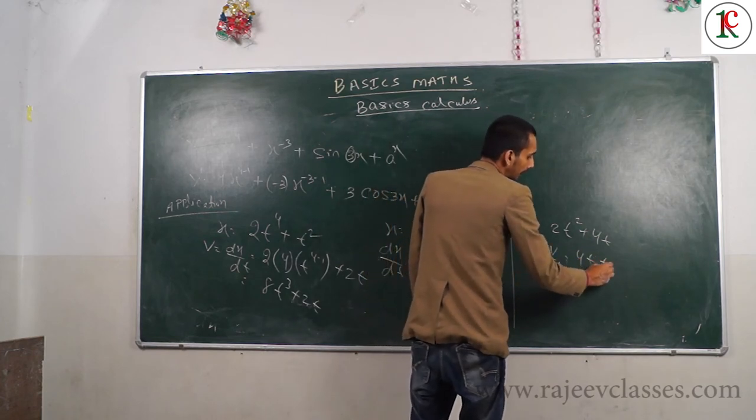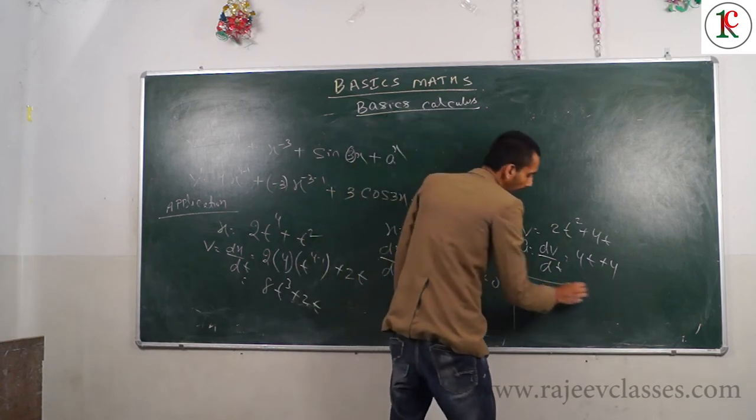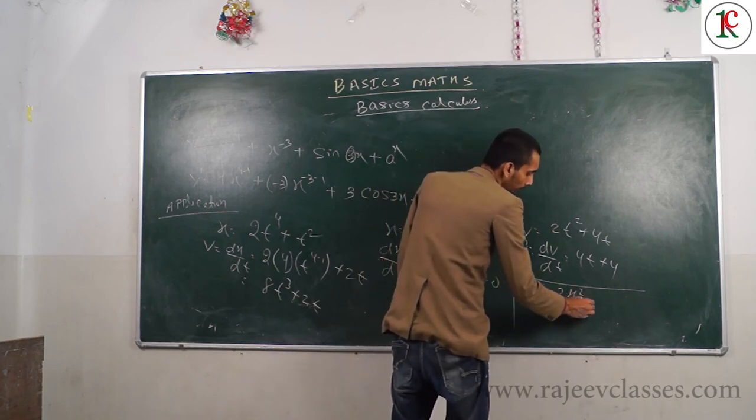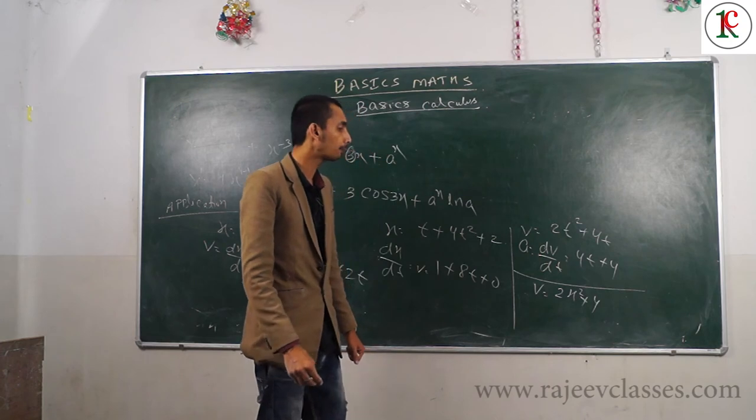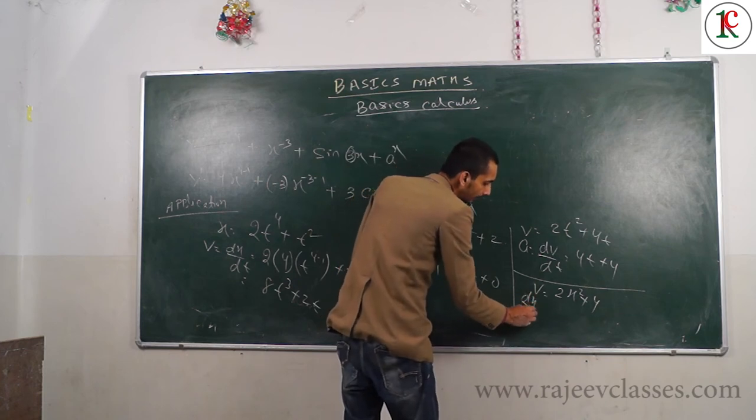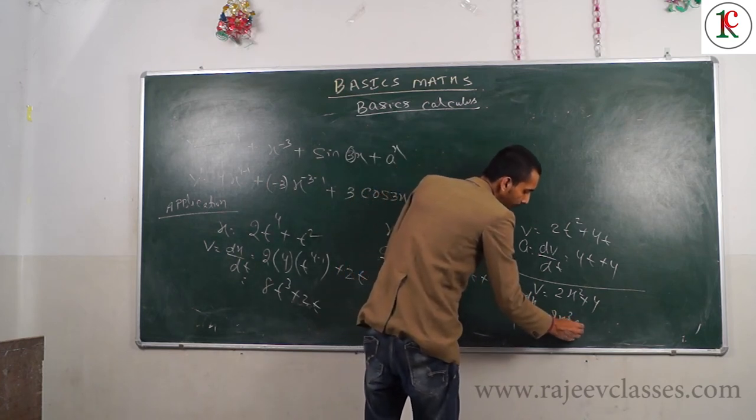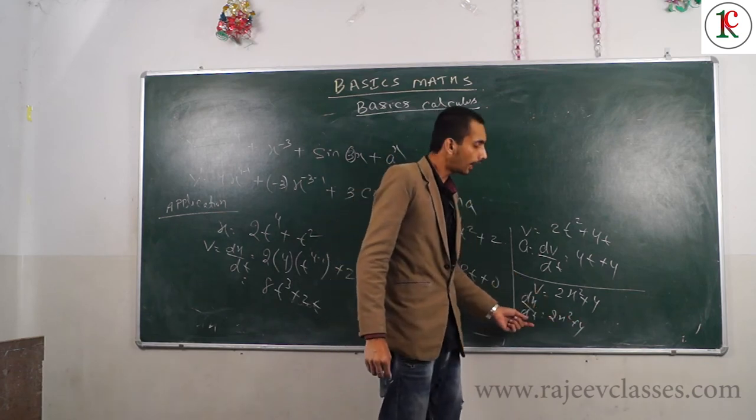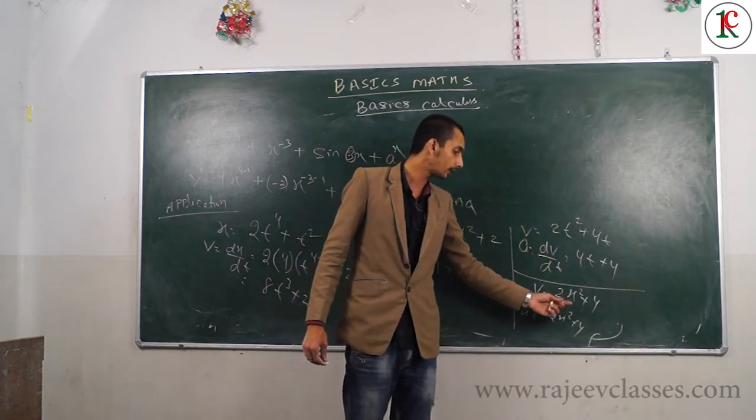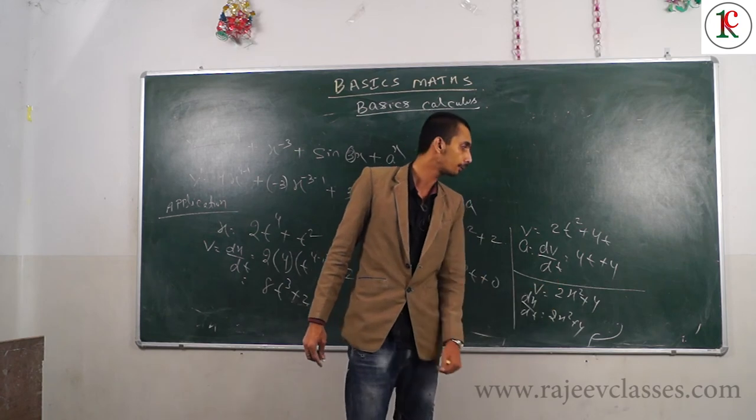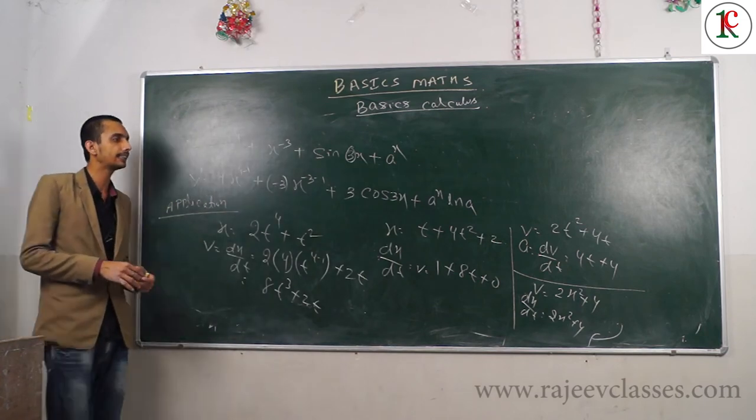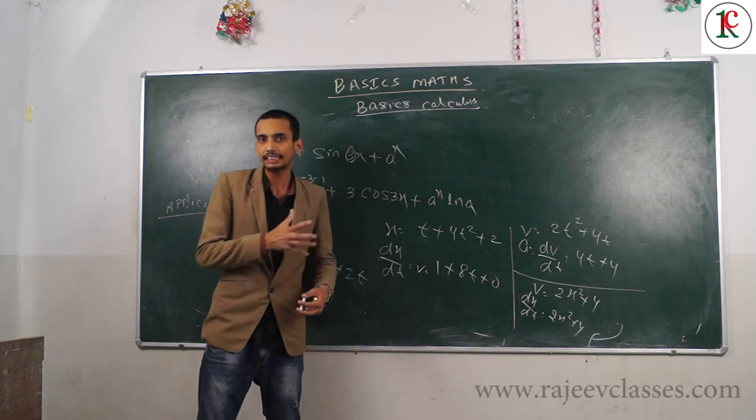If velocity is given as 2t squared plus 4t, and you need to calculate position, you integrate. We'll cover integration later. If position is given and you need velocity, you differentiate. Velocity to position requires integration.